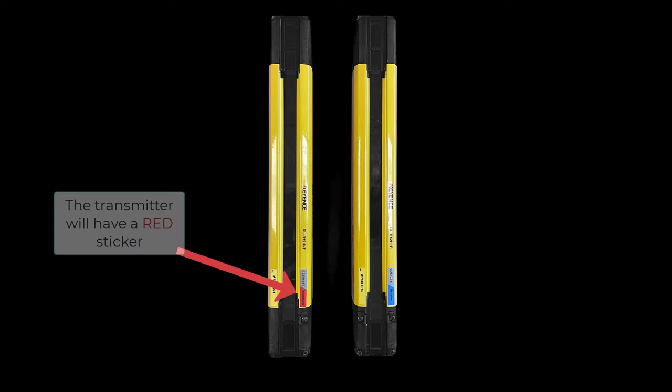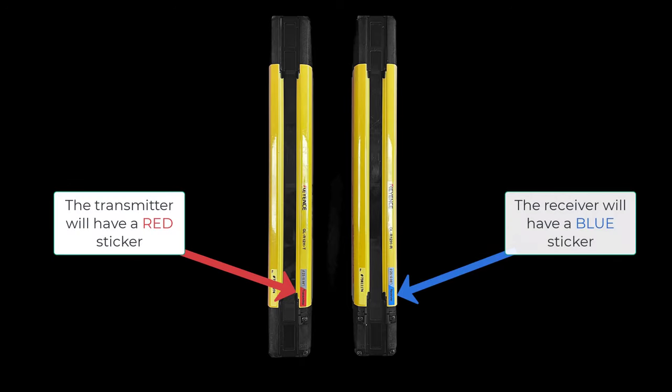There's a red sticker located on the bottom of the transmitter and a blue sticker located on the bottom of the receiver. This is important when understanding which side of the light curtain sticks you need to plug in your cables.